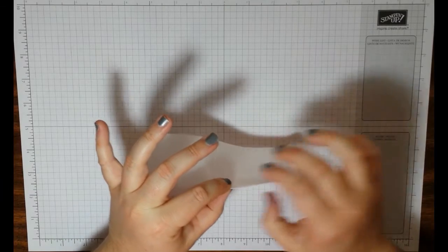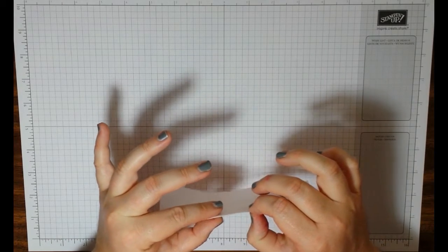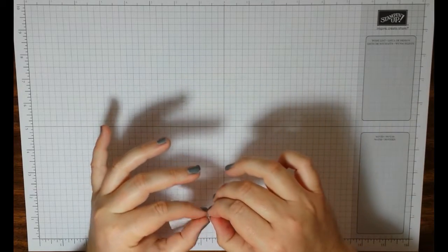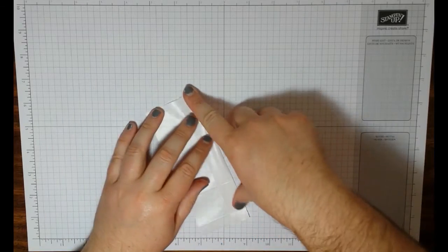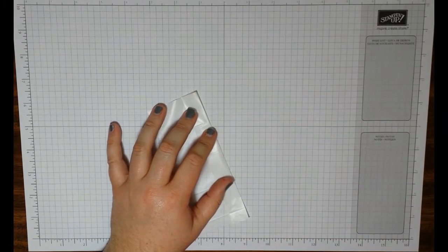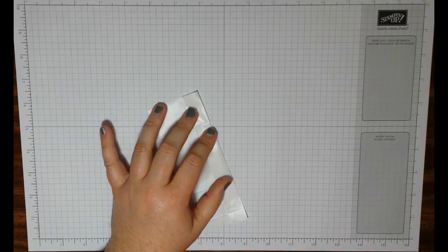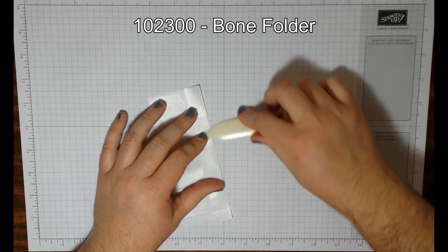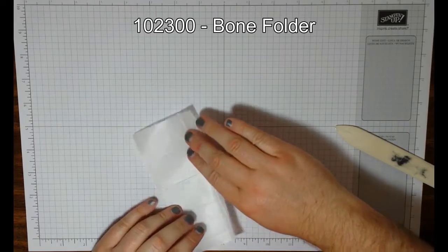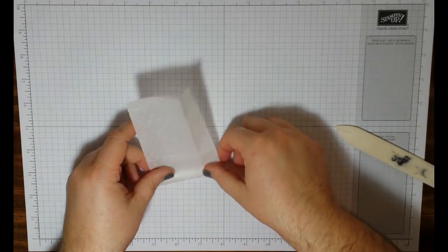So the hardest part is after you score it is finding the score lines. There we go. All right, so I first crease it with my fingers. Grab my bone folder if I can find it. Got buried on my table there. And then I just use my bone folder.